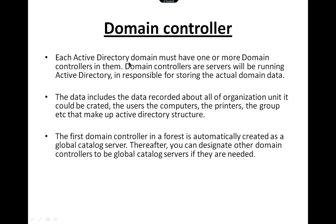Each domain controller must have one or more domains on them. Domain controllers are servers running active directory and are responsible for storing actual domain data. The data includes data records and all organizational units that could be created — users, computers, printers, groups, etc. — that make up the active directory structure. The first domain controller in the forest is automatically created as a global catalogue server, and afterward you can designate other domain controllers to be global catalogue servers if needed.